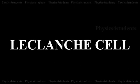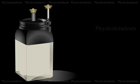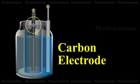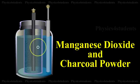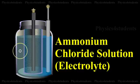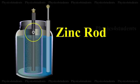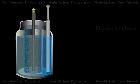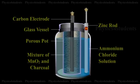A Leclanché cell consists of a carbon electrode packed in a porous pot containing manganese dioxide and charcoal powder. The porous pot is immersed in a saturated solution of ammonium chloride, which serves as the electrolyte, contained in an outer glass vessel. A zinc rod is immersed in the electrolytic solution.